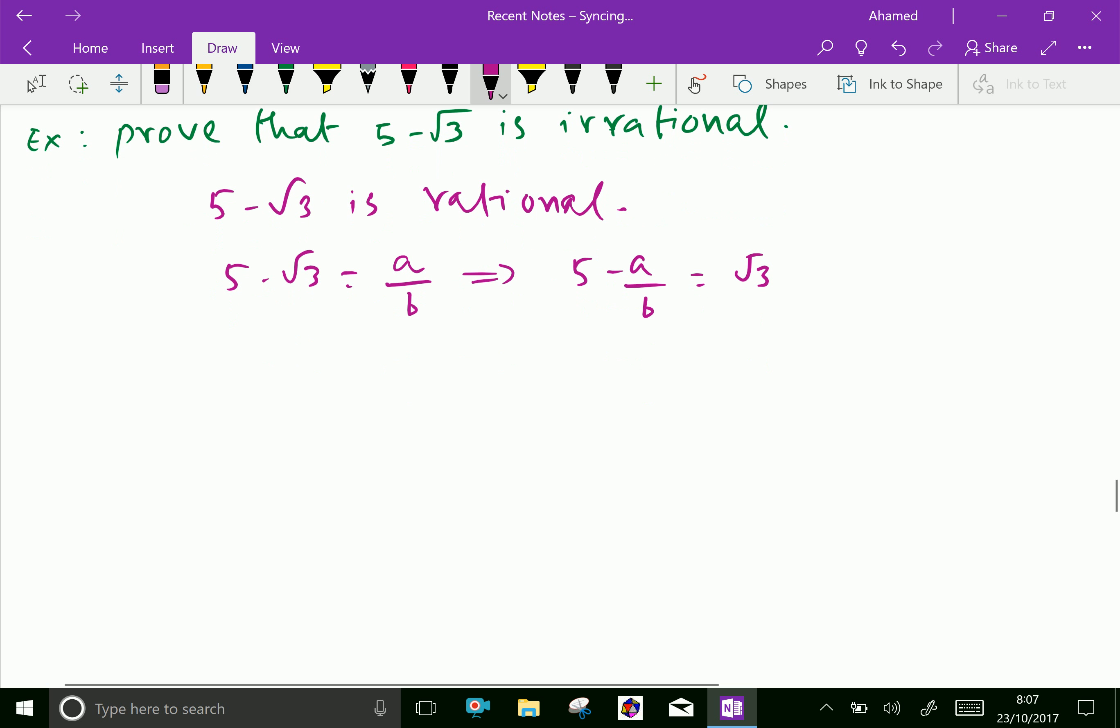By cross multiplying and simplification, 5b - a = √3, where a and b are integers.